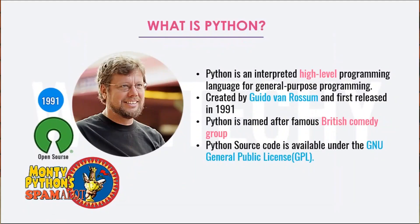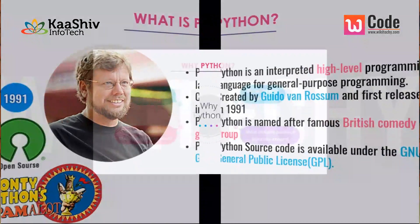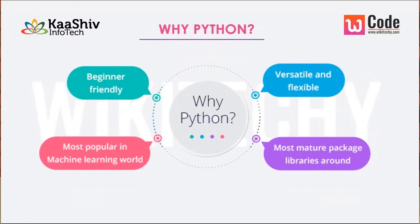What is Python? Python is an interpreted high-level language. It was created in the year 1991 by Guido van Rossum. It was named after a famous British comedy group. Apart from that, it is open source software and freely available. Python is beginner-friendly, versatile, and really compatible with other technologies.